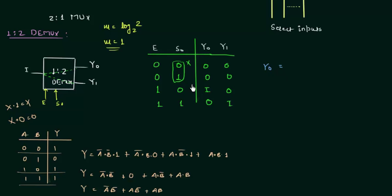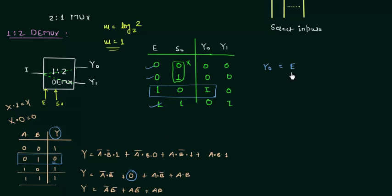In the same way, for Y0, we only consider cases where Y0 is high. We consider the third case: E is 1, S0 is 0, so we get E · S0' · i. For Y1, we consider the last case: E is 1, S0 is 1, giving E · S0 · i. So Y0 = E · S0' · i and Y1 = E · S0 · i.